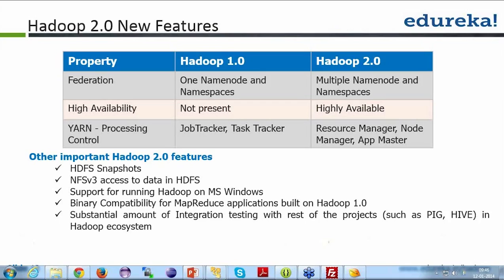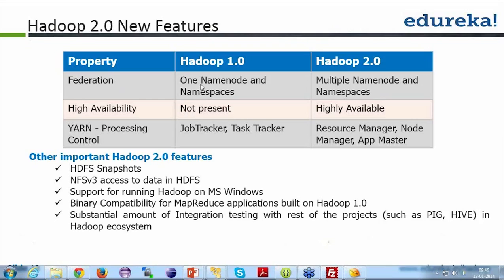One important thing was that you have only one NameNode in Hadoop. The namespace is a file system that specifies the metadata of a particular file system. You can divide your complete file system into multiple namespaces — for example, a marketing namespace — which are logically different. In Hadoop 1.0, we just had one single NameNode, and with that, a single namespace, meaning no logical partition — just a single file system.